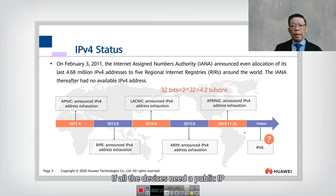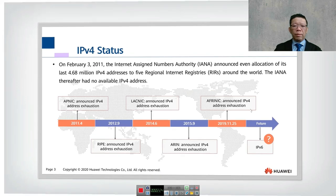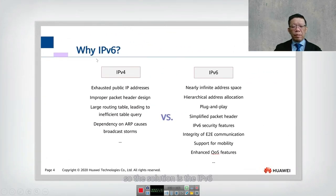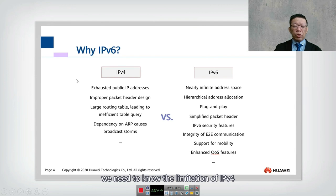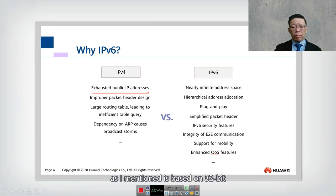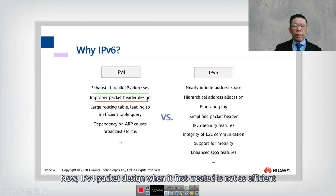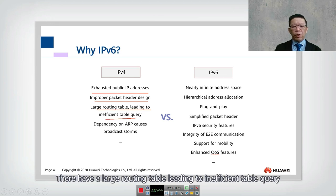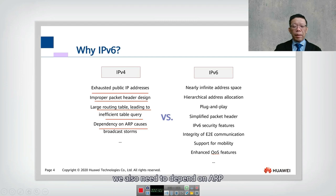Moving into 2020, we really do not have many IPv4 addresses left if all devices need a public IP. The solution is IPv6. The limitations of IPv4 include exhausted public IP addresses based on 32 bits, an inefficient packet header design, a large routing table leading to inefficient table queries, and dependence on ARP — Address Resolution Protocol — which causes broadcast storms.